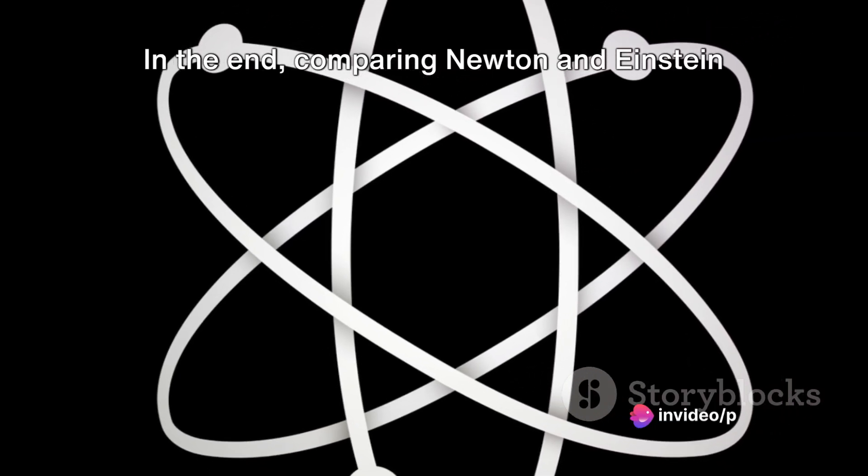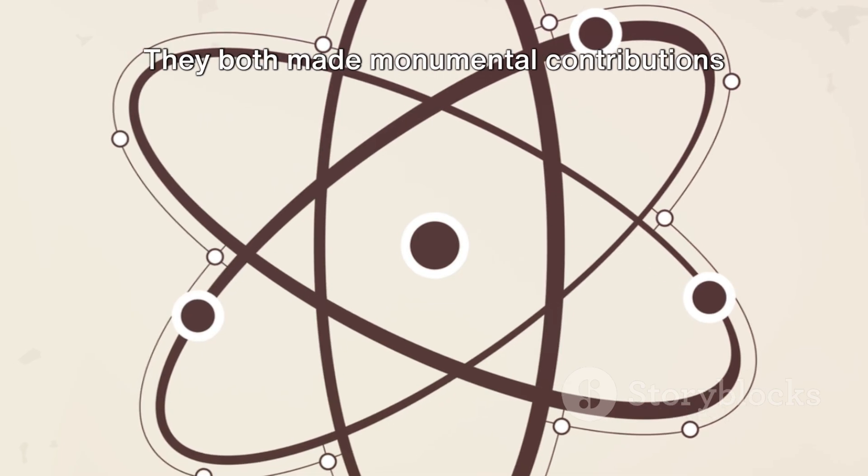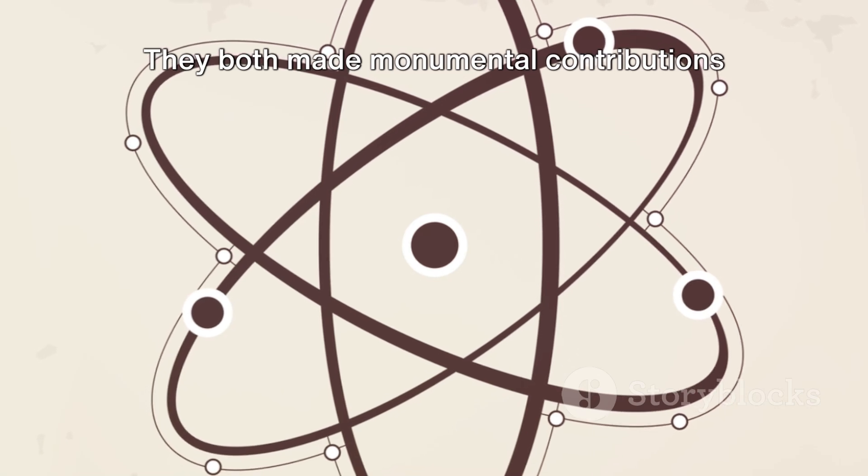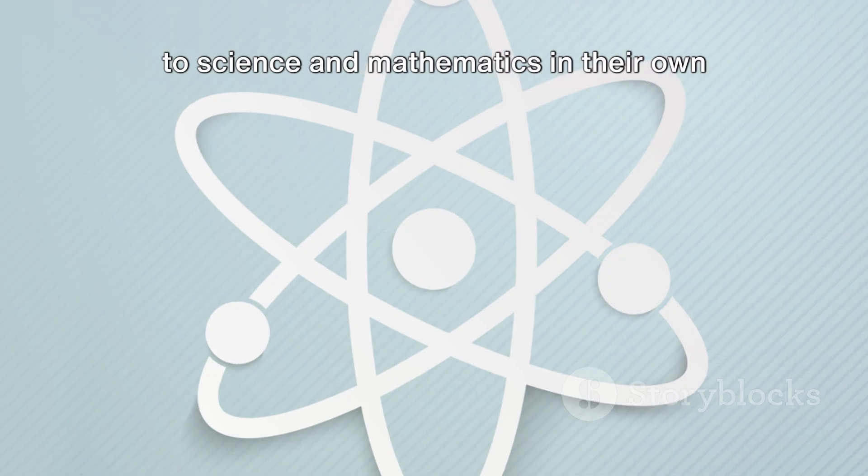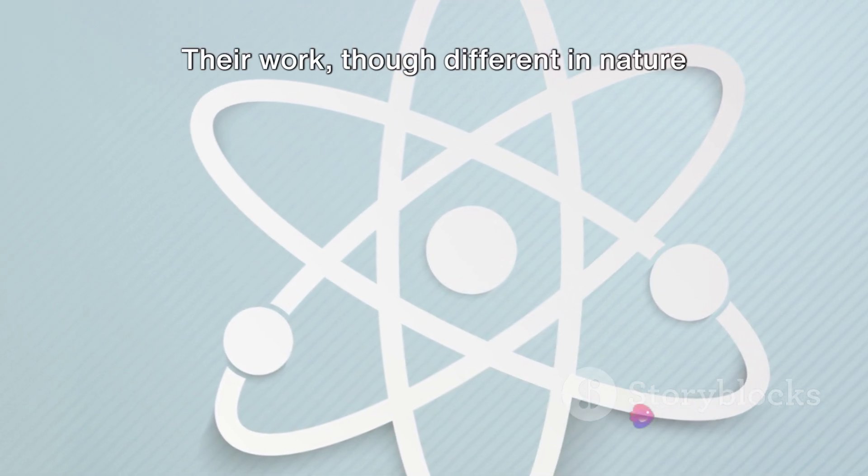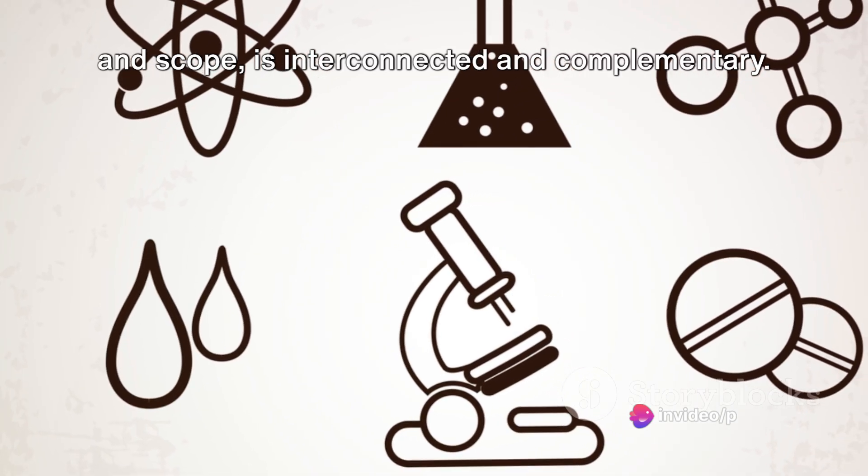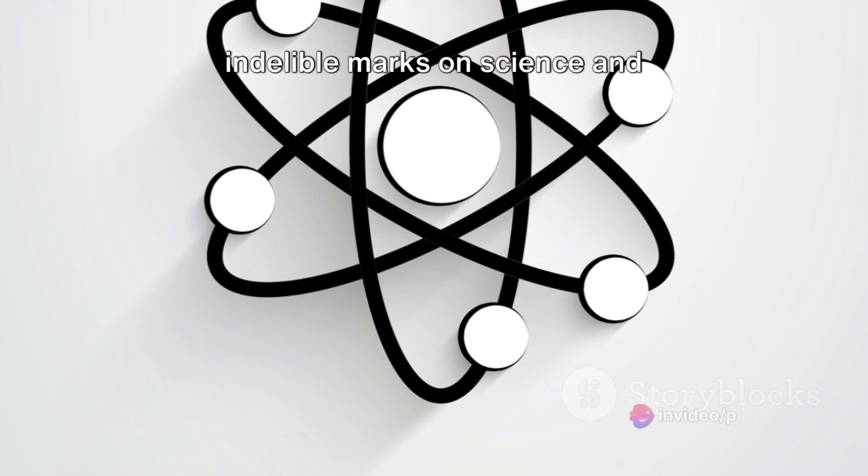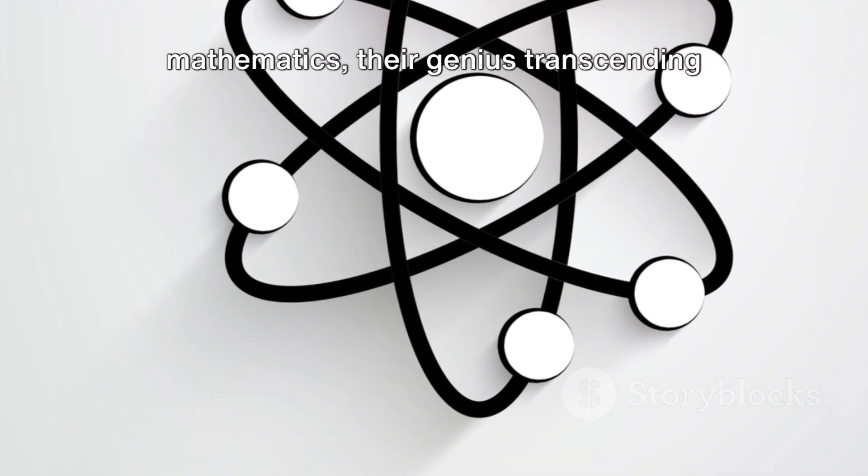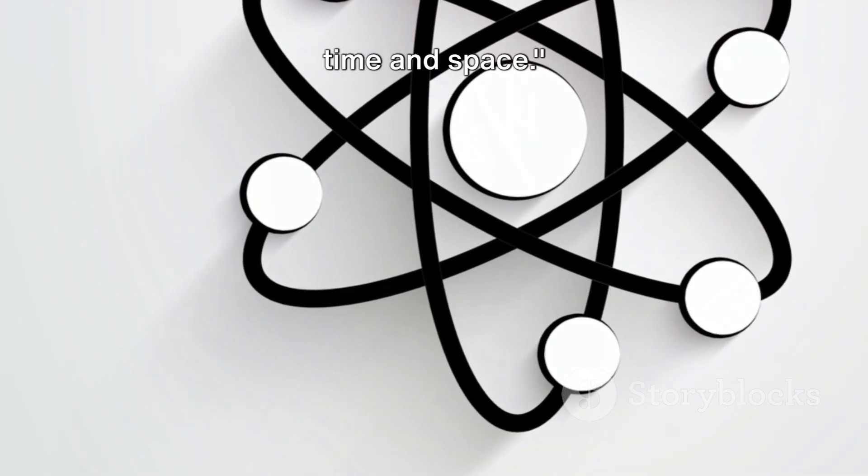In the end, comparing Newton and Einstein is like comparing apples and oranges. They both made monumental contributions to science and mathematics in their own unique ways. Their work, though different in nature and scope, is interconnected and complementary. Both Newton and Einstein have left indelible marks on science and mathematics. Their genius transcending time and space.